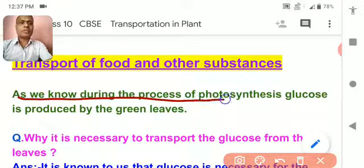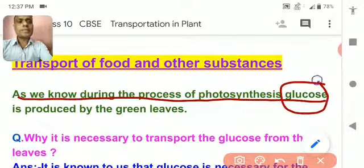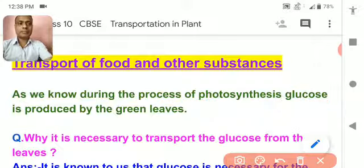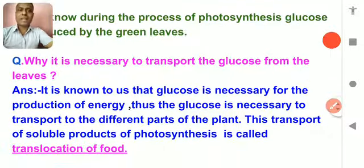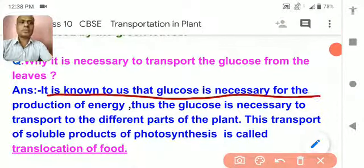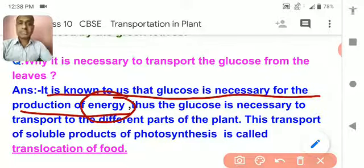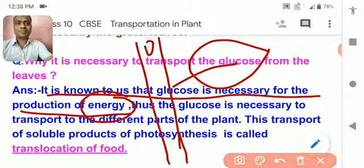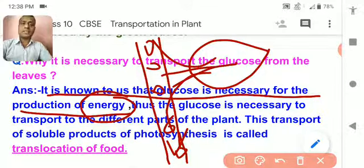During the process of photosynthesis, glucose is produced by the green leaves. The question arises: why is it necessary to transport the glucose from the leaves? It is known to us that glucose is necessary for the production of energy — glucose is the basic source of energy. This glucose is formed in the leaves, while energy is required by each and every cell of the plant. So this glucose should be transported to each and every living cell, so that the living cell can utilize the glucose in the process of respiration to produce energy.